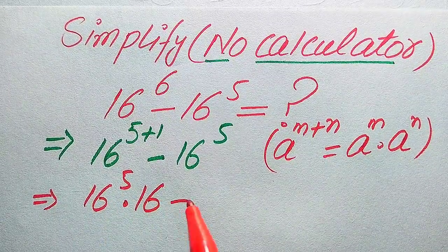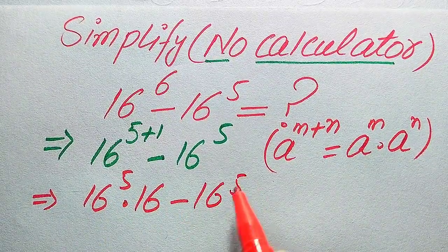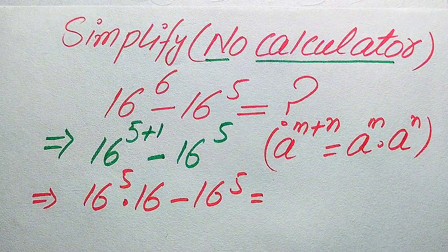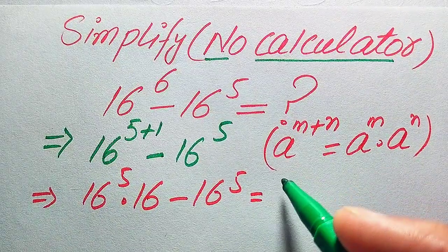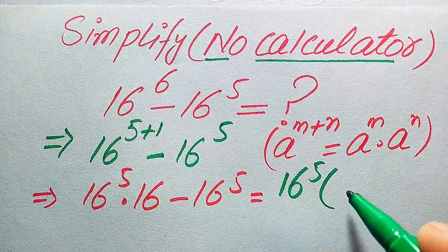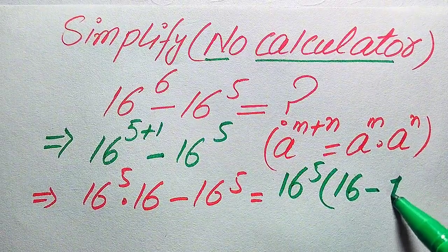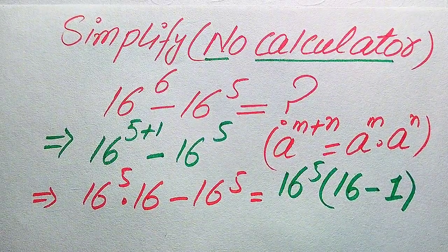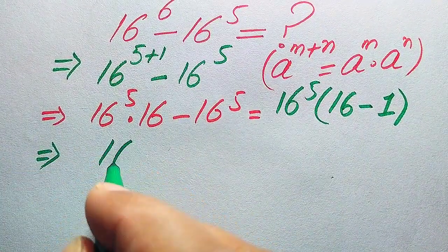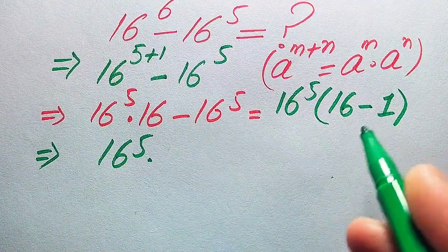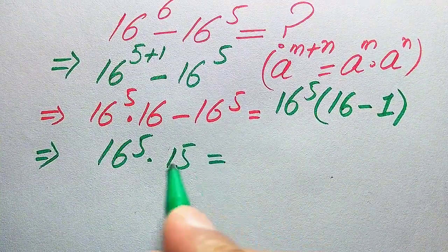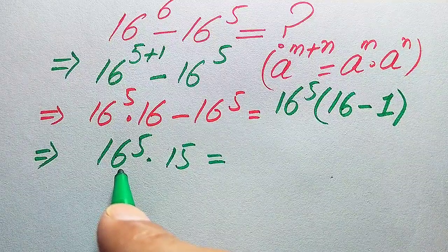According to this rule of exponents, we break the exponents and write it as 16 to the power of 5 multiplied by 16, minus 16 to the power of 5. Both terms involve 16 to the power of 5, so we take it as common, giving us 16 to the power of 5 multiplied by (16 minus 1).